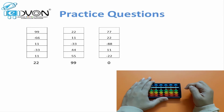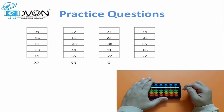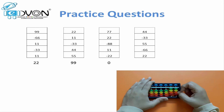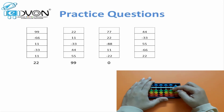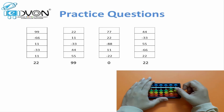We will practice two more questions: 44 minus 33 plus 55 minus 66 plus 22. Answer: 22.